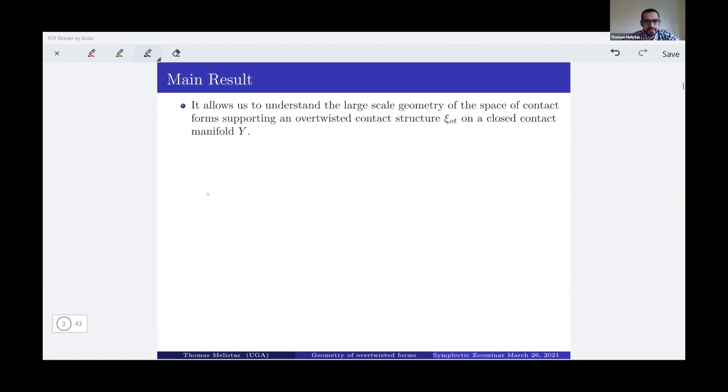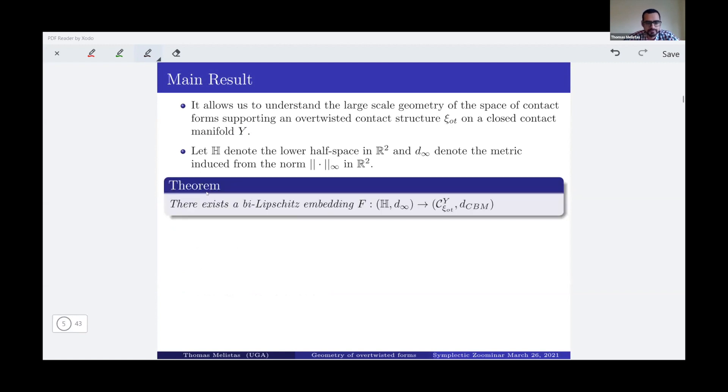So first of all, the result allows us to understand the large scale geometry of the space of contact forms on a given over twisted contact structure on a closed contact manifold Y. If we denote by H the lower half space in R^2 with the infinity metric coming from the sup form in R^2, then the result is explicitly that there exists a bi-Lipschitz embedding theorem from this part of R^2 to the space of over twisted contact forms, given an over twisted structure on Y, with this contact Banach measured distance.